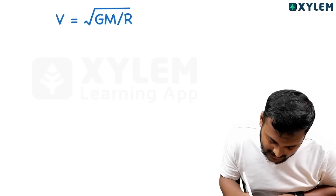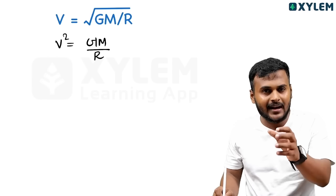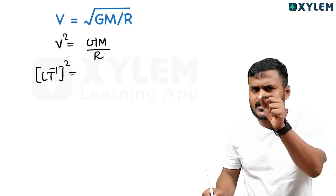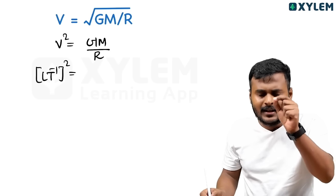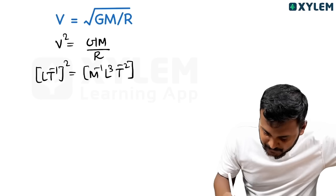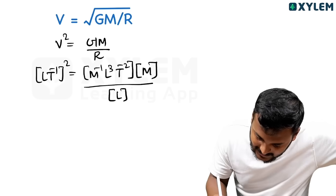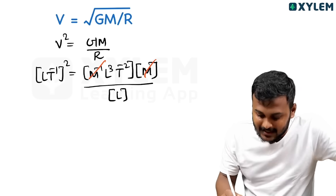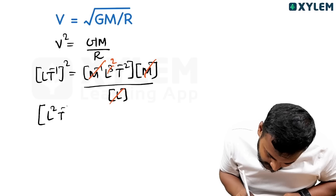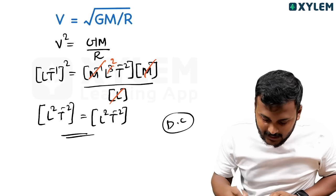Second equation: V² = GM/R. G is the universal gravitational constant with dimension M⁻¹L³T⁻². M is mass, R is the radius so dimension is L. Substituting: M⁻¹·L³·T⁻²·M / L gives L²T⁻² = L²T⁻². Therefore the given equation is dimensionally correct.